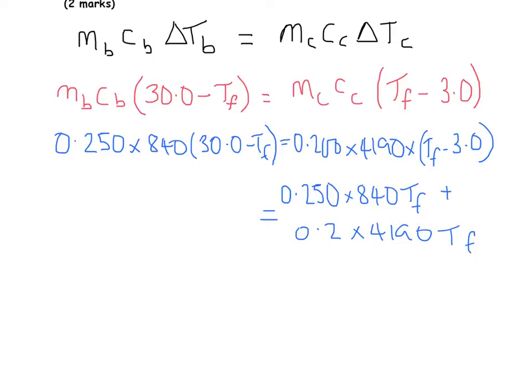So I've just basically multiplied out the brackets and moved one side over. And then obviously on this side you've got 0.250 times 840 times 30 plus 0.200 times 4190 times 3.0. So those two sides are equal to each other. So then obviously we're going to factorize the right hand side and then divide across by that number.